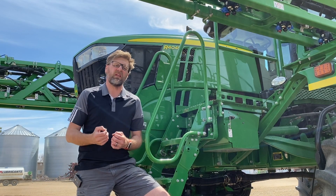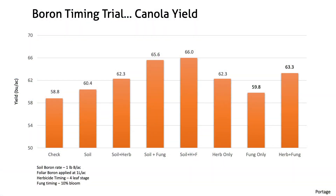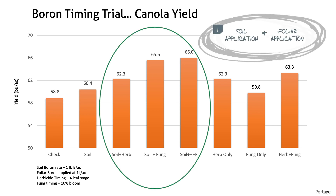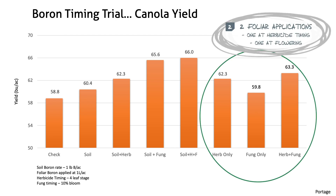So how do we avoid deficiency? Timing of application is critical. We've been advised that the timing for boron is 10% flowering. This is right if we want to manage sufficient soils just for reproduction; however, most of our soils are becoming deficient. So under a deficient scenario, really we should start in the soil and then follow up at flowering with a foliar product. If logistics don't allow us to start in the soil, a second best would be two foliar applications — one at herbicide timing and one at flowering.